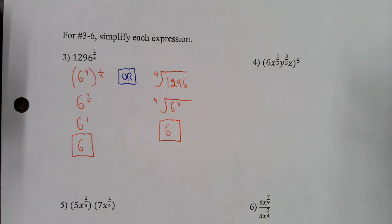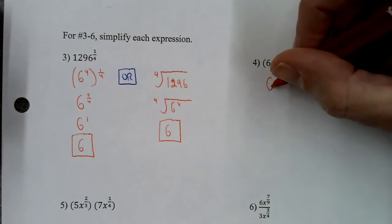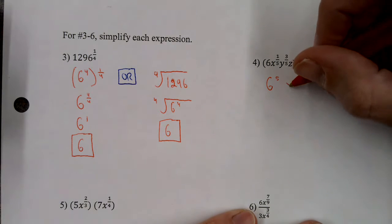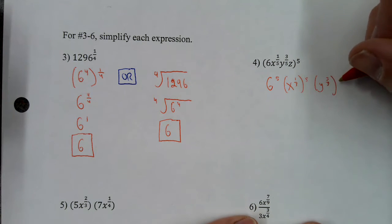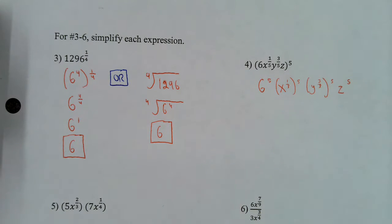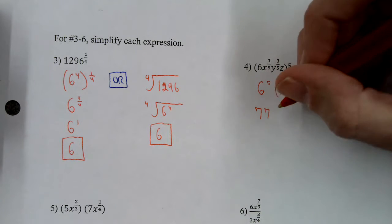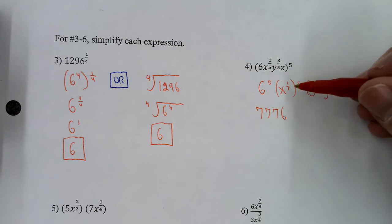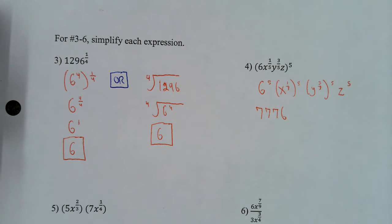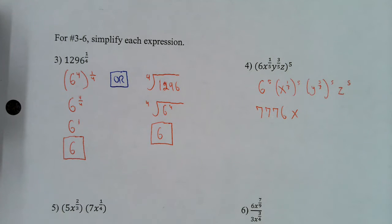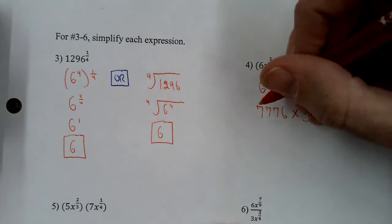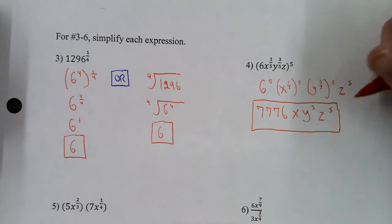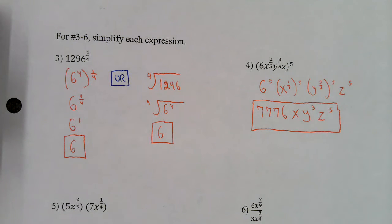Number four, you have to raise everything inside the parentheses to the fifth power. So it's six to the fifth power, x to the one-fifth to the fifth power, y to the three-fifths to the fifth power, and z to the fifth power. Six to the fifth power is 7,776. x to the one-fifth to the fifth — multiply the exponents — gives x to the five over five, which is just x to the first. Three-fifths times five gives y to the third power. And then you have z to the fifth power. The key thing is making sure you raise everything inside the parentheses to the fifth power.